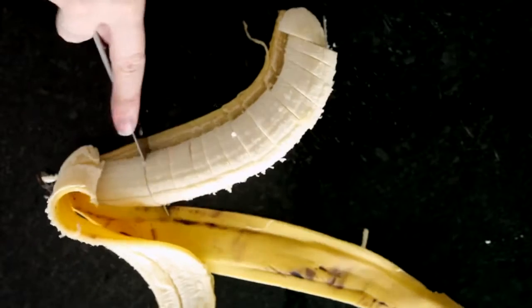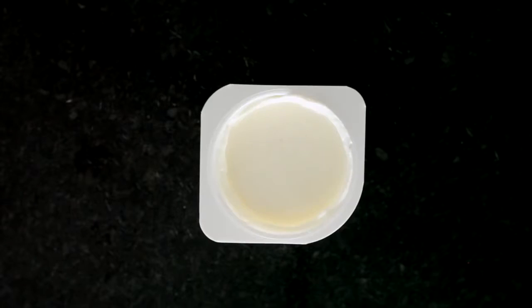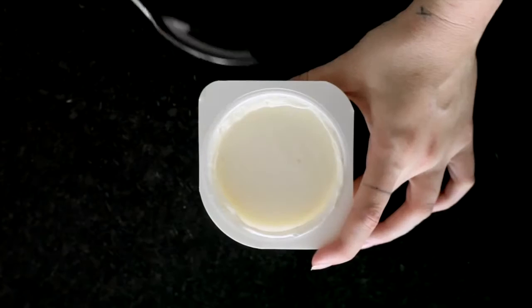Last up we have a maca and honey smoothie so again you're going to grab two bananas. You can grab Greek yogurt or coconut yogurt like I've used here.